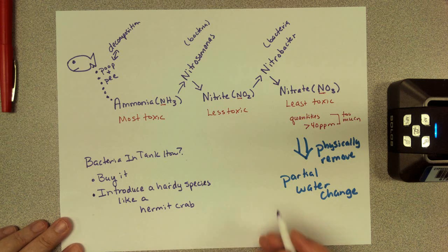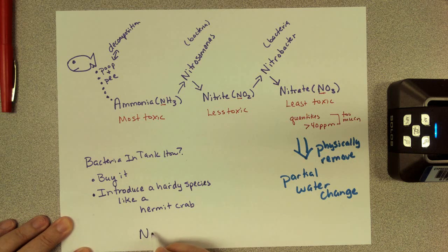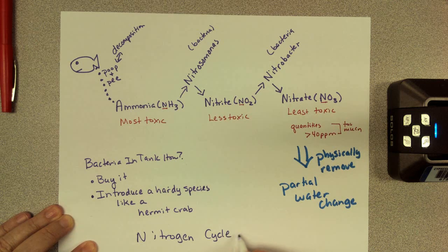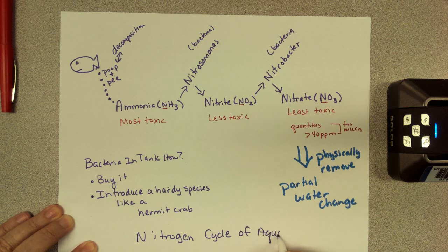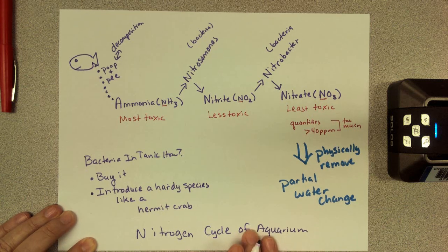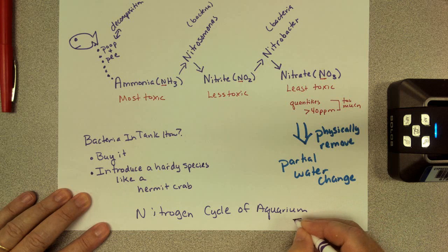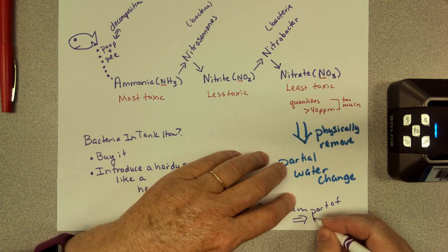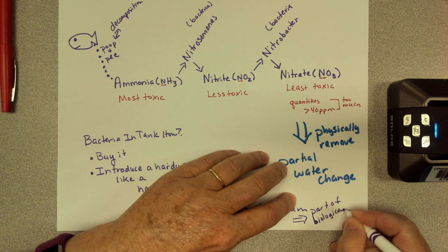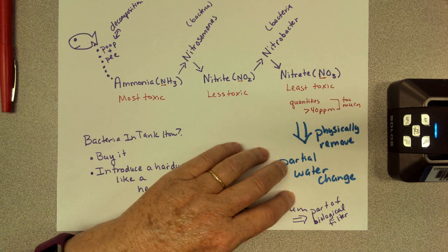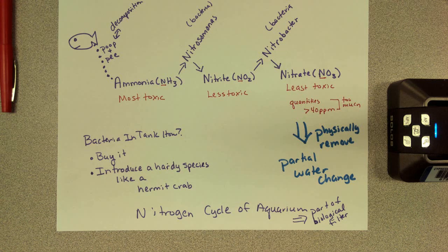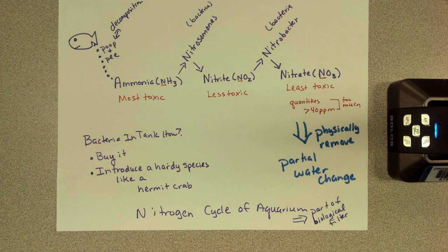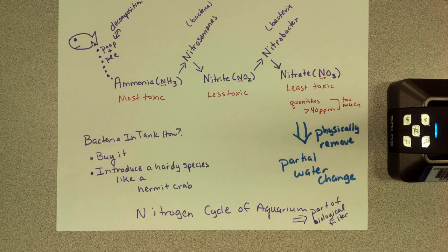Anyway, this is your nitrogen cycle of your fish tank. Let's put this on the bottom. Oh gosh, my handwriting is terrible. Nitrogen cycle of aquarium. And this is part of your biological filter. Part of, again, bottom of the paper. Okay, that's it. If you have any questions for me, you can always text me or email me, or you can ask me a question in class. All of that will work. Thanks for your time and I'll see you later.